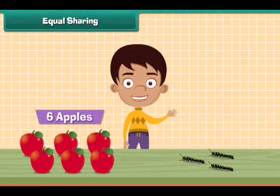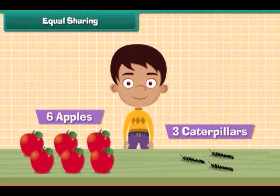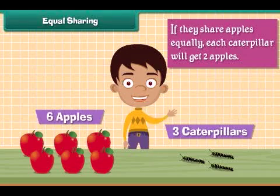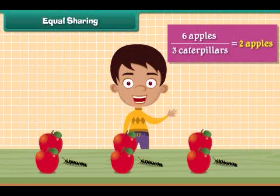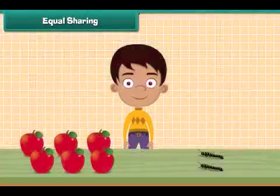Here are six apples and three caterpillars. If they share apples equally, each caterpillar will get two apples. Six apples divided into three caterpillars are equal to two apples each.